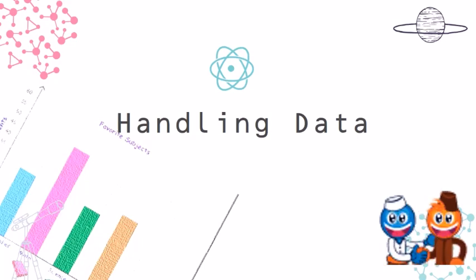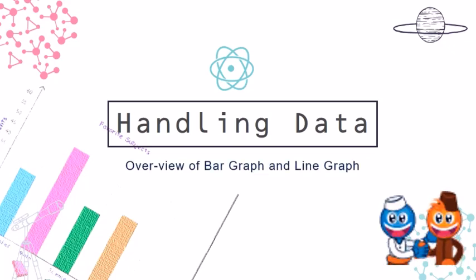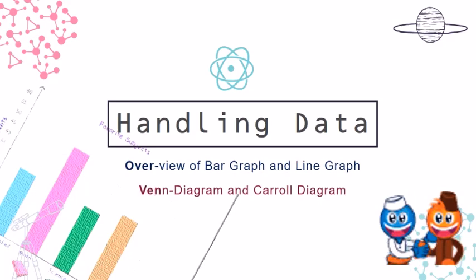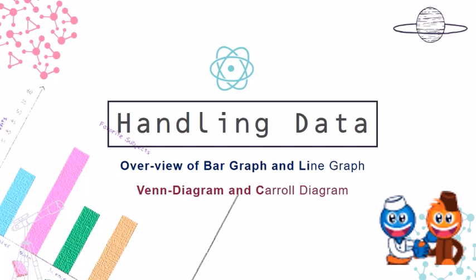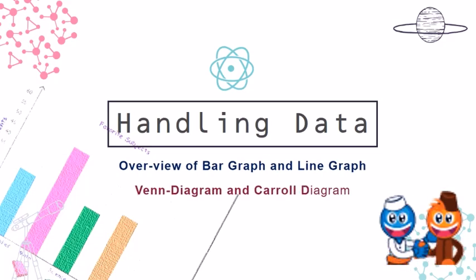You all are aware that data means information, and we are going to sort information in many ways. You have learned previously how to start it in bar graph and also line graph from the given table. In this video, you are going to have some overview. And the next thing is, you are going to learn about Venn diagram and also Carroll diagram. What are those? Let's check it together.